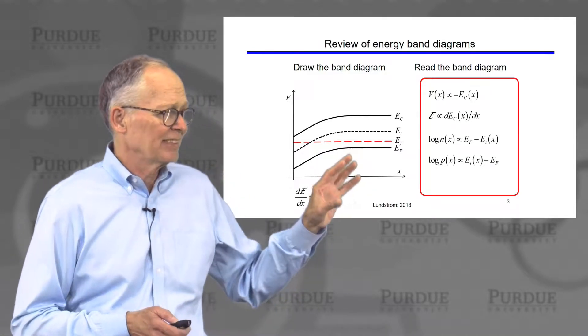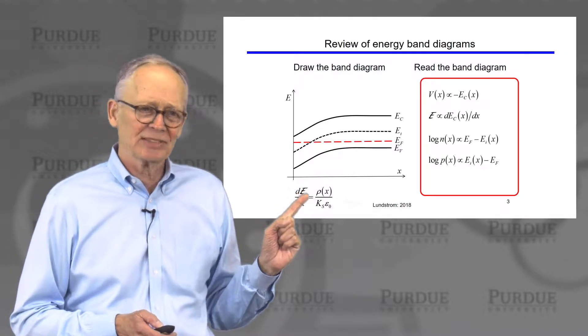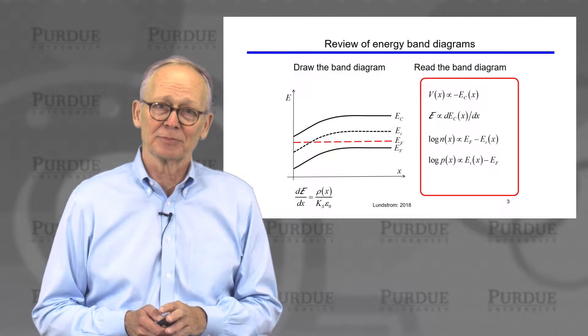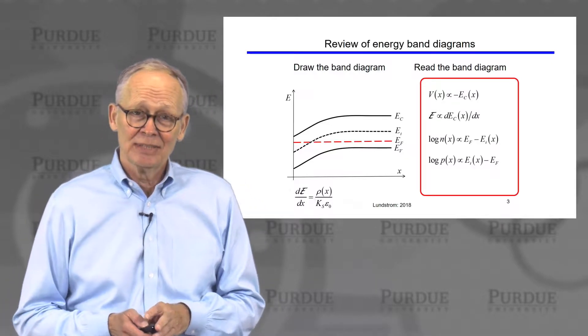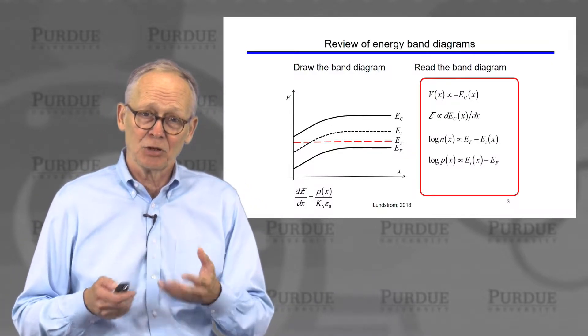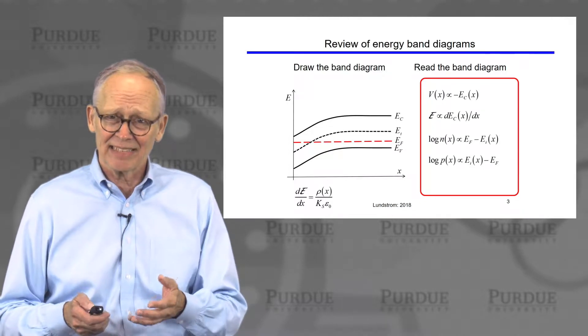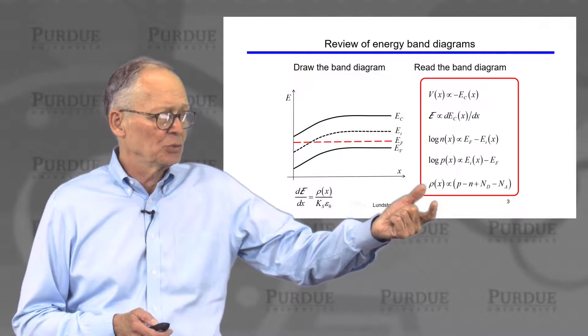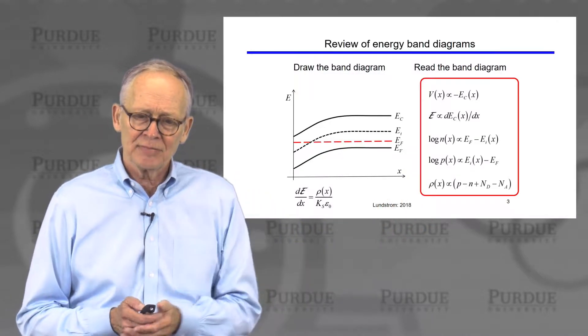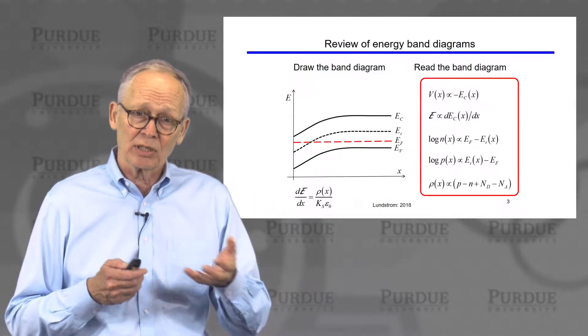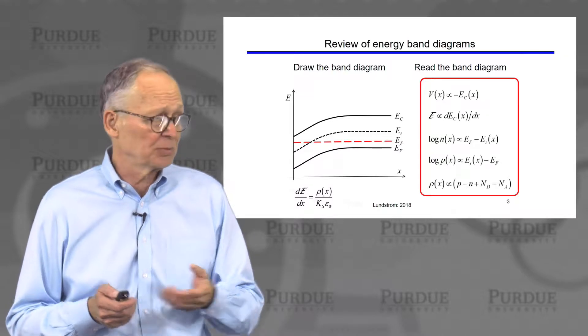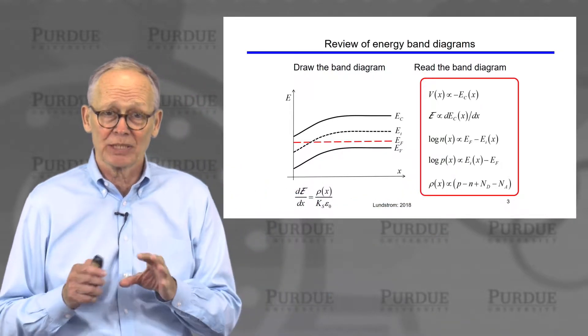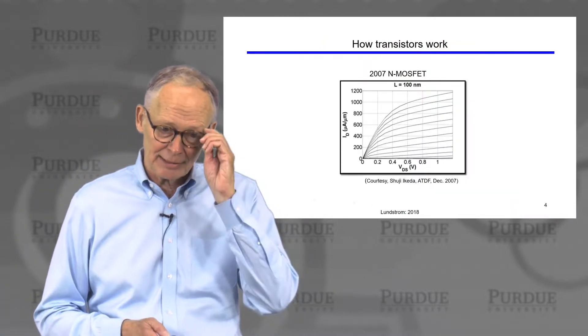We could also get the space charge density. The Poisson equation says that the slope of the electric field is related to the space charge density. So the electric field is related to the slope of the energy band. We could take a second derivative, or it turns out it's usually easier to deduce what the space charge density is by knowing what the hole and electron concentrations are versus position. And presumably we know how we've doped the semiconductor, so we can put that together and deduce the space charge density.